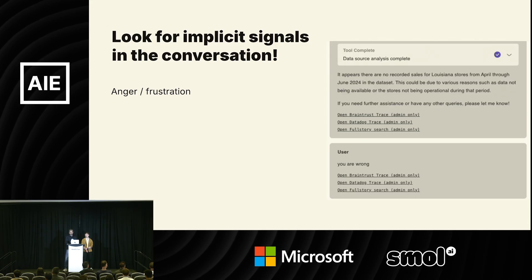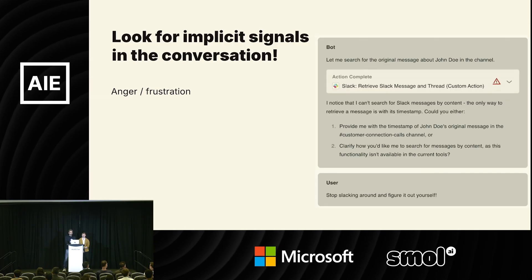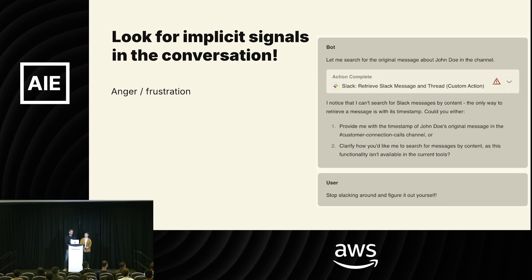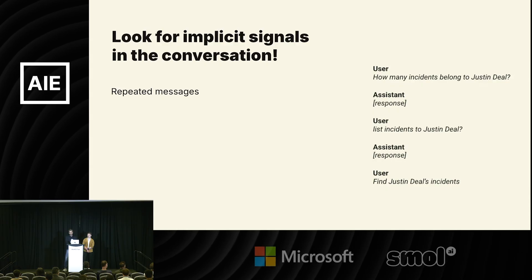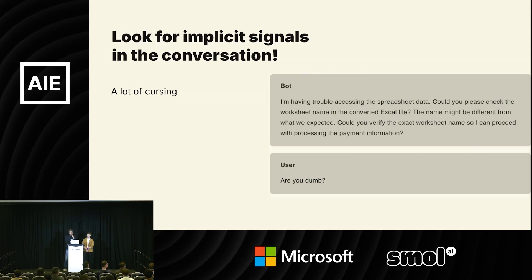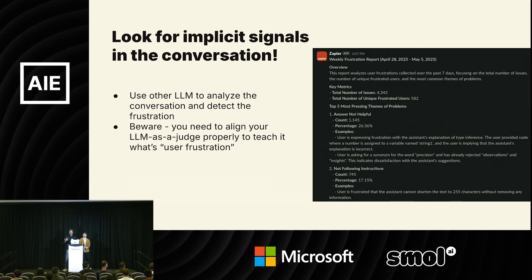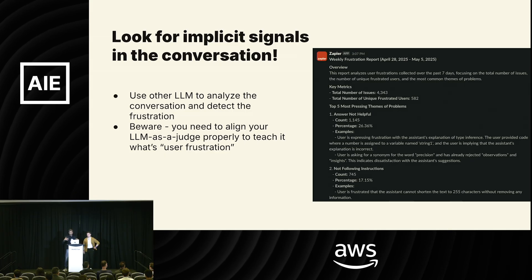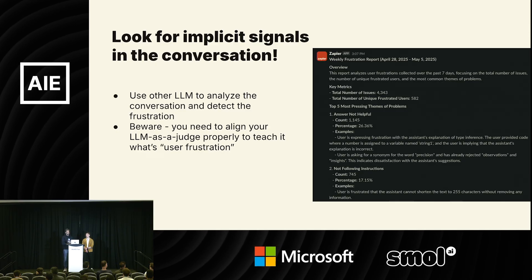You can also look for implicit signals in the conversation itself. If a user is clearly letting you know they're not happy, or tells the agent to stop slacking around — that's implicit negative feedback. Sometimes a user sends a follow-up message rehashing the previous question to see if the LLM interprets the phrasing better — that's also implicit negative feedback. And there's also a surprising amount of cursing. Recently we've had a lot of success using an LLM to detect and group frustrations, with a weekly report posted in Slack, but it took a lot of tinkering to make sure the LLM understood what frustration means in our product context.